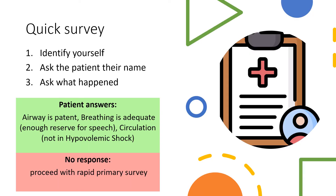On patient's arrival to the Trauma Unit, you can run a quick survey to assess the general well-being of the patient. You can ask the patient their name and the events prior to this, and should the patient be able to respond accordingly, you can say that their airway is patent, that they're breathing adequately, and that they're not as yet in hypovolemic shock. Proceed to your Rapid Primary Survey.